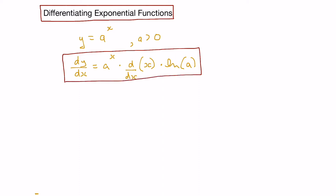For example, let's say we had y equals 2 to the x. Using the formula, the derivative with respect to x would equal the function itself times the derivative with respect to x of x, times the natural logarithm of the base, 2. Now the derivative of x is simply 1, so the answer becomes 2 to the x times ln 2.